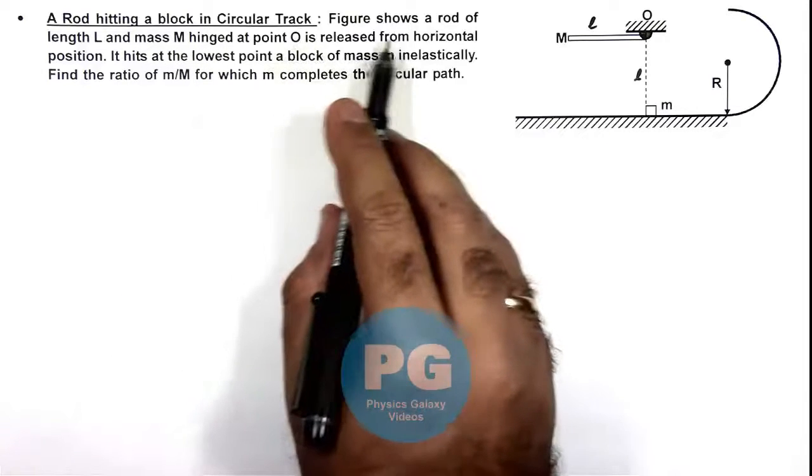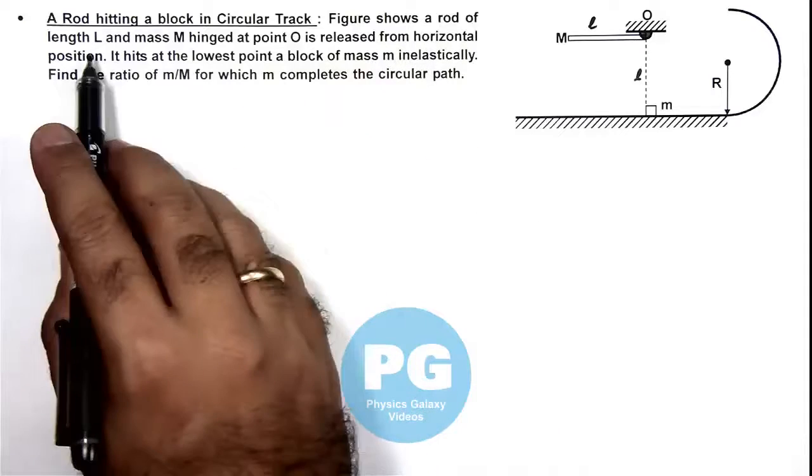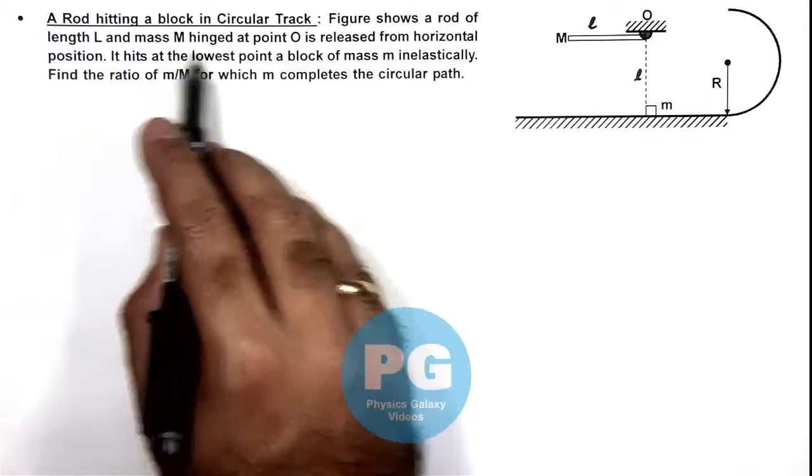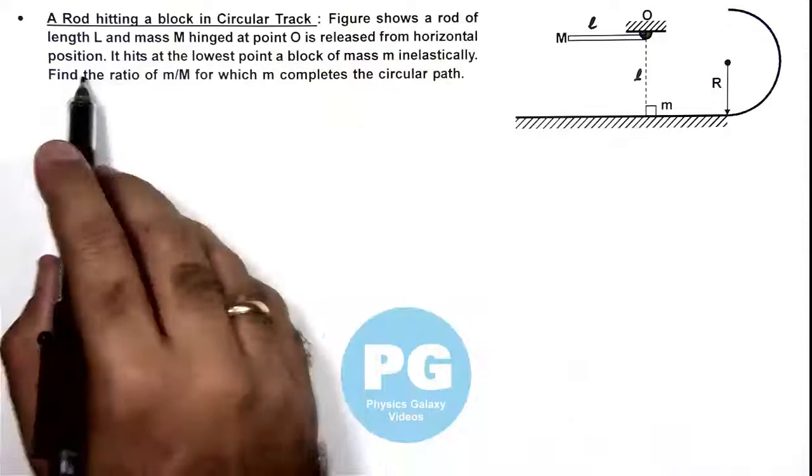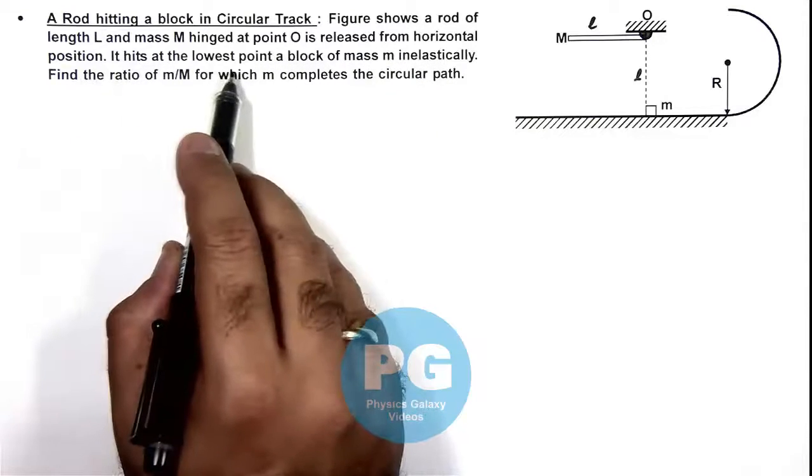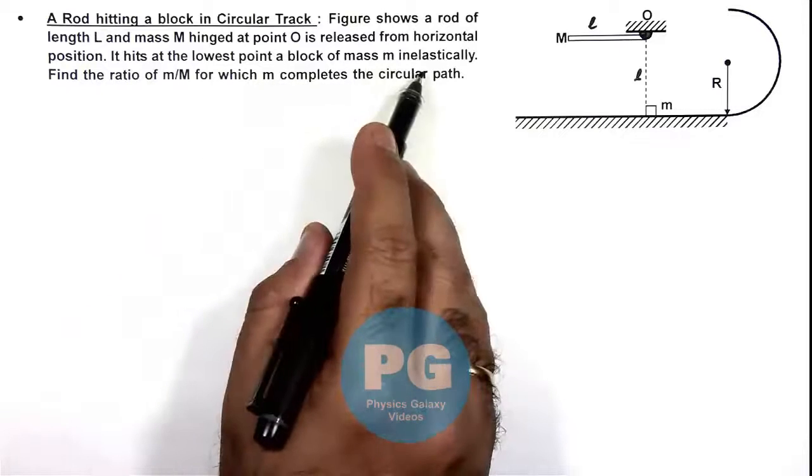Here we are given that the figure shows a rod of length L and mass M hinged at point O, and it is released from horizontal position. It hits at the lowest point a block of mass m inelastically.